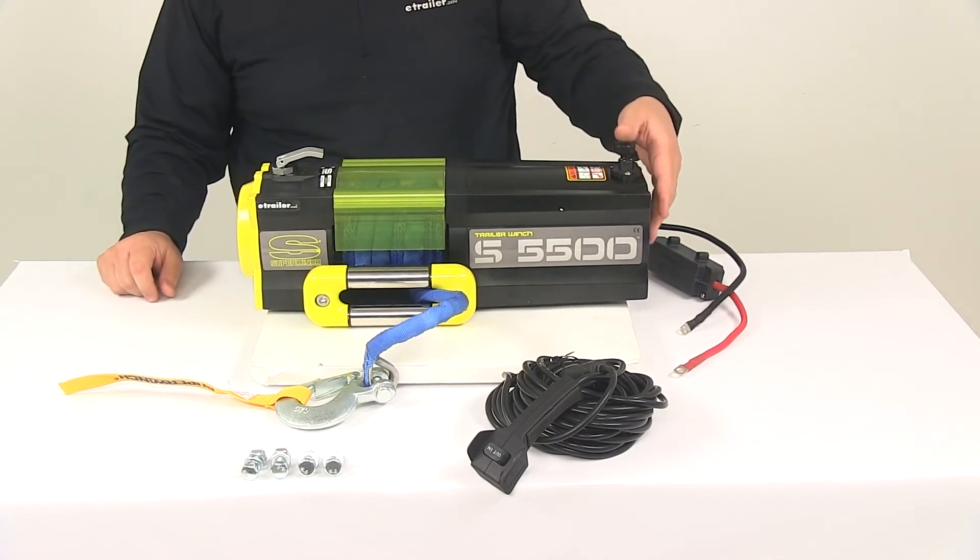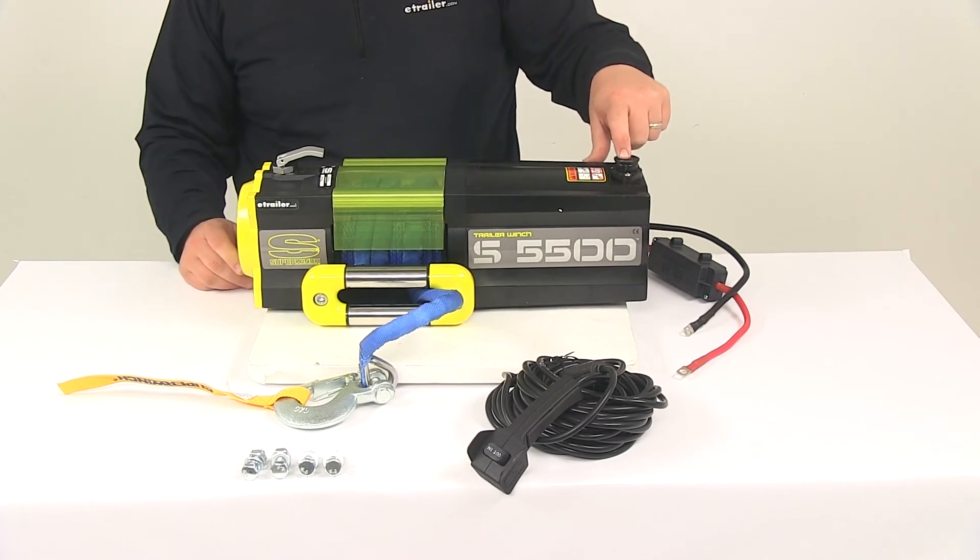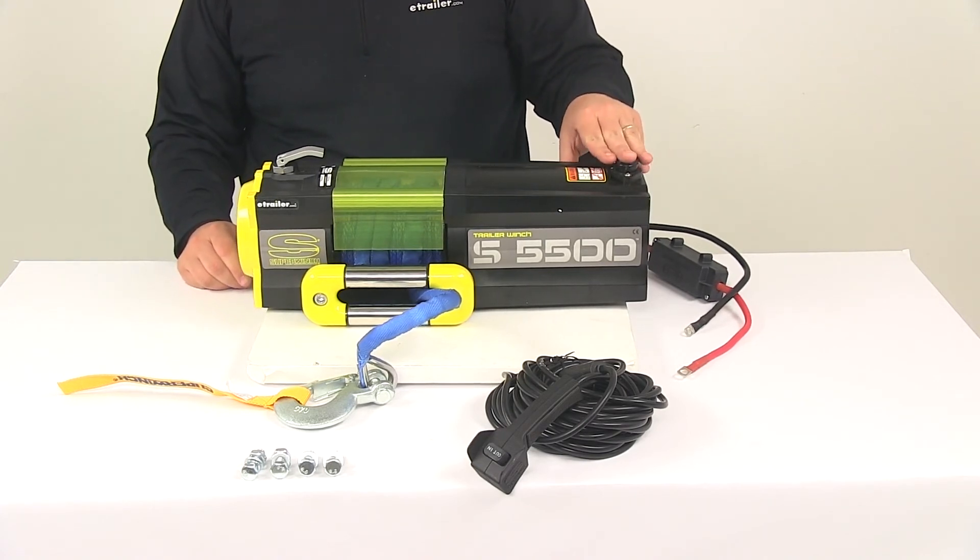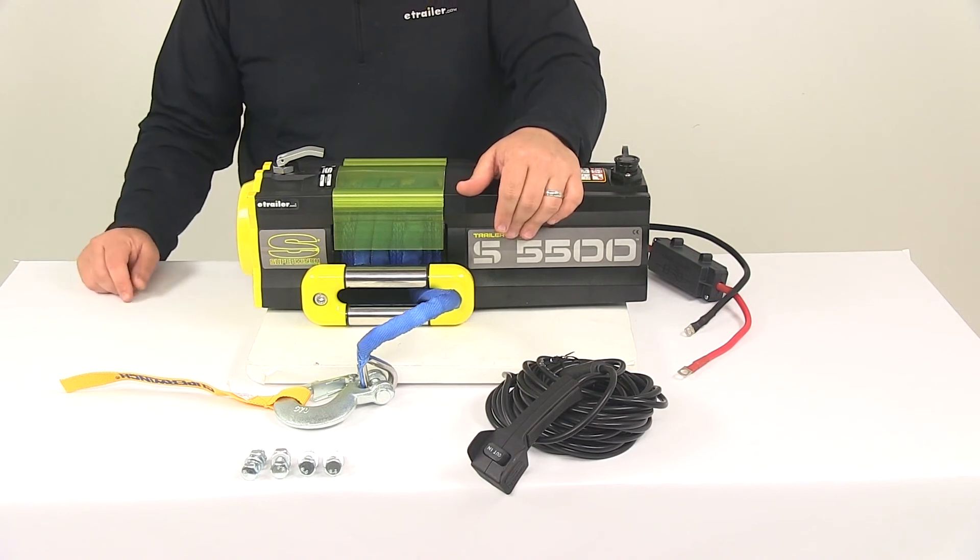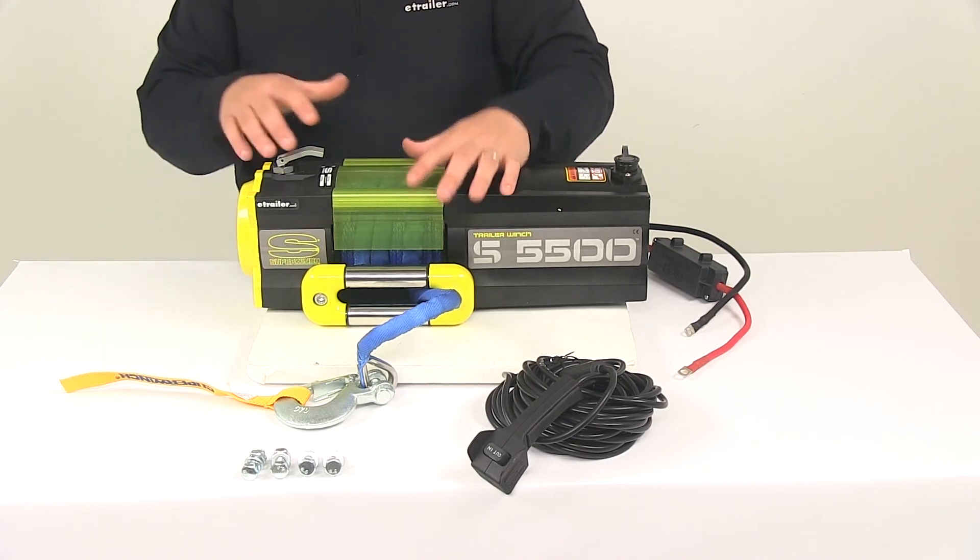The plug on this end simply connects to the port right here on top of the winch, very easy to gain access to. You plug it together and that's all there is to it. When it's not being used, put that cap back over to keep dirt, grime, and moisture out of the connection points.